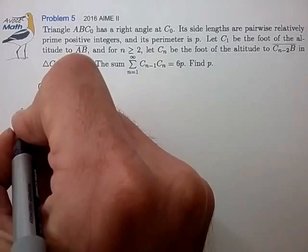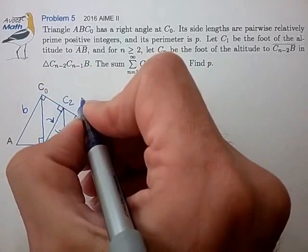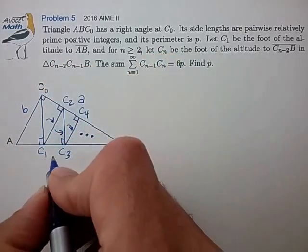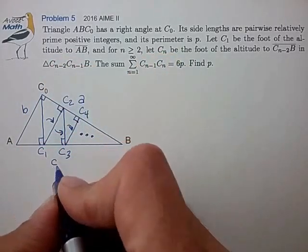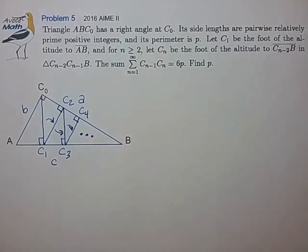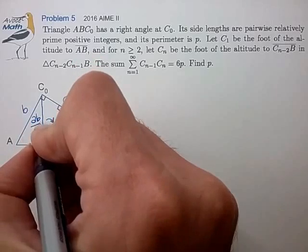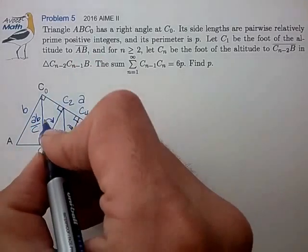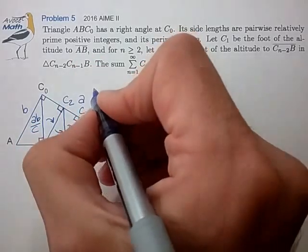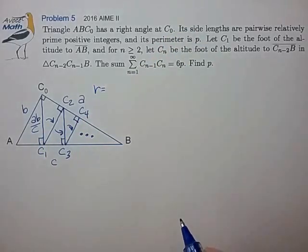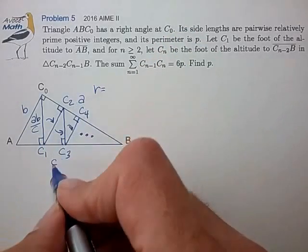So let's write out the side lengths of this triangle: side length B, side length A, and side length C. And we find that this first line segment is given by AB over C, and this ratio between all these line segments is given by the similar triangle ratio A over C.